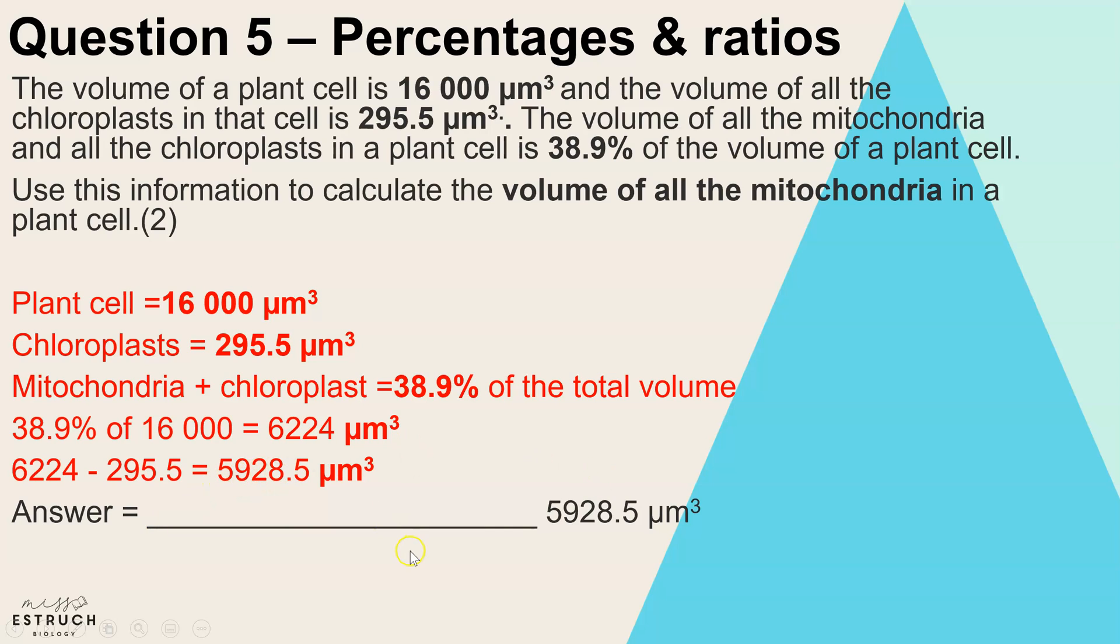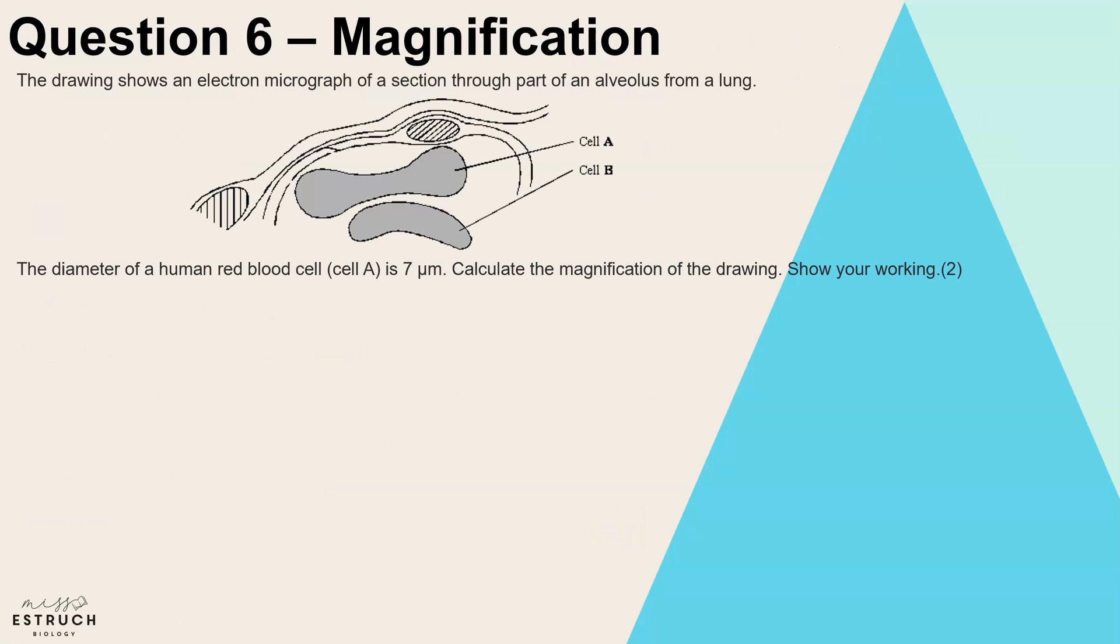Question six: magnification. The drawing shows an electron micrograph of a section through part of an alveolus from the lung. We've got cell A and cell B, but they actually tell us that cell A is a human red blood cell. So the diameter of the human red blood cell is actually seven micrometers, and we have to calculate the magnification showing our working.